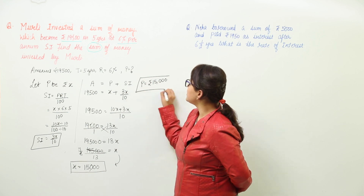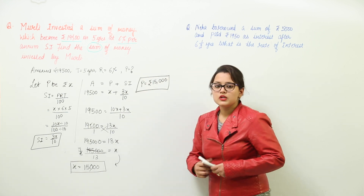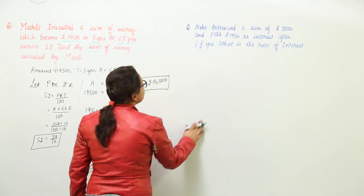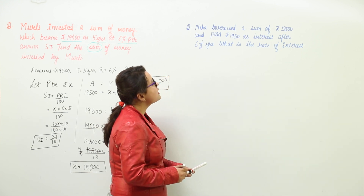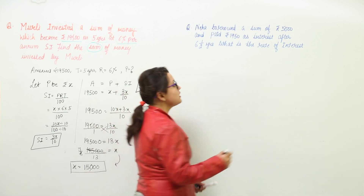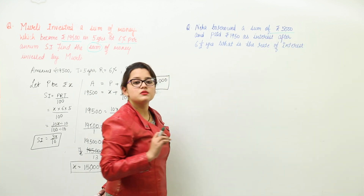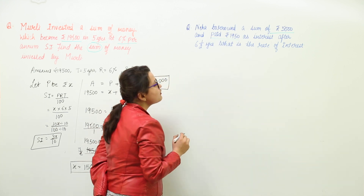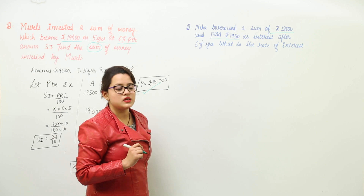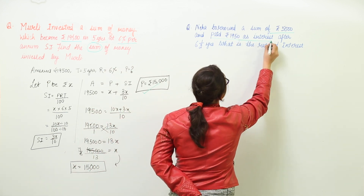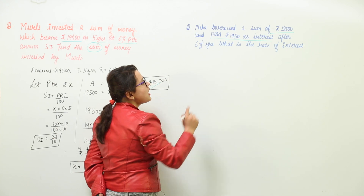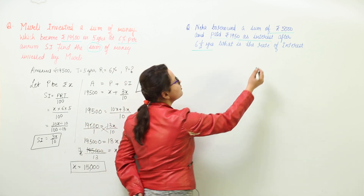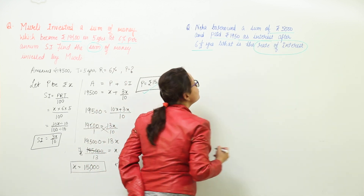That is how you calculate the principal. Now moving on to the second question: Neha has borrowed a sum of rupees 5,000 — so 5,000 is the principal. She is going to pay rupees 1,950 as interest after 6 and a half years. The time period is 6.5 years, and we have to find the rate of interest.